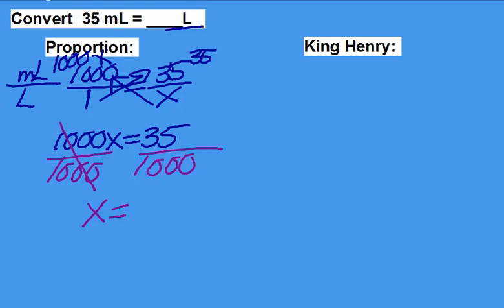Again, you can use your powers of 10. The decimal right here is behind the 5. Move your decimal back three places this time. So x equals 0.035 liters. And doesn't that make sense? Thirty-five thousandths of a liter.